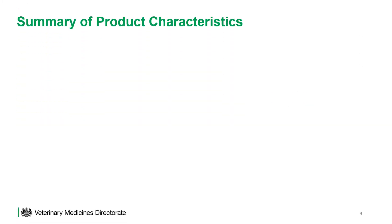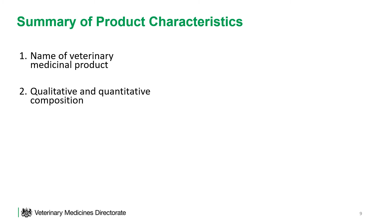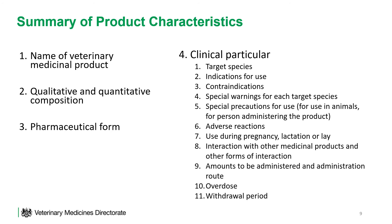The summary of product characteristics is an important source of information on a particular veterinary medicinal product. Of particular note is section 4.6, adverse reactions. This details the adverse reactions which can occur following product administration, along with their frequency and seriousness. The frequency is on a scale from very common, which is more than one in 10 colonies treated displaying adverse reactions, to very rare, which is less than one colony in 10,000 colonies treated. Even if an adverse reaction is noted in this section of the SPC, it should still be reported to the VMD as it may be occurring more or less frequently than expected or be more serious than anticipated.